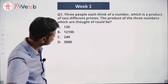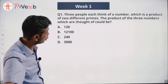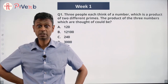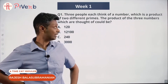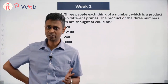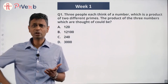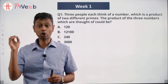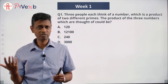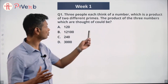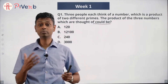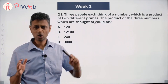Three people, each thinking of a number which is a product of two different primes. The product of the three numbers — what could it be? This is not a routine question like 'find this number' or 'calculate the average.' The question asks which of these options could be the product, meaning only one of the four choices is valid; the other three don't fit the criteria.